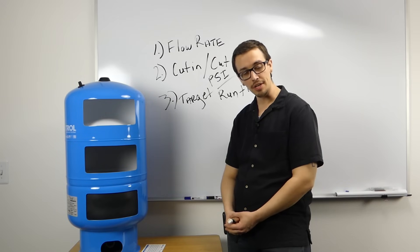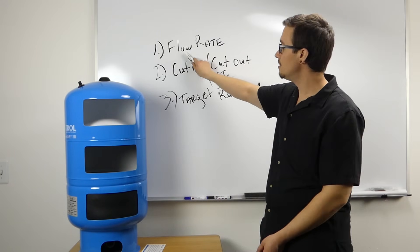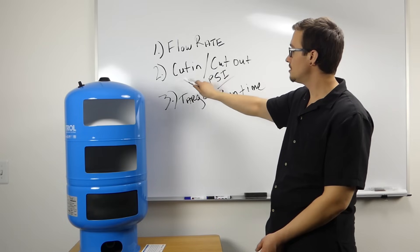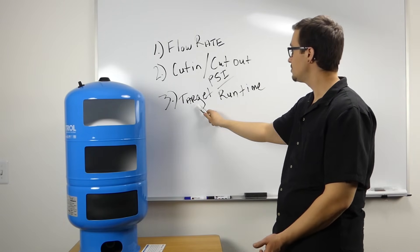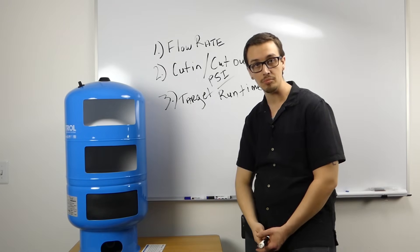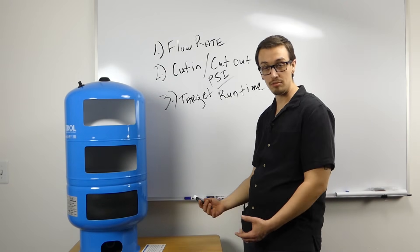To determine the proper size of the tank, you're going to want to consider three main factors: the flow rate, the system's cut-in and cut-out pressure, as well as your target runtime or the time in between cycles.